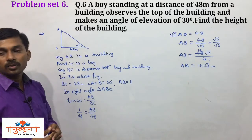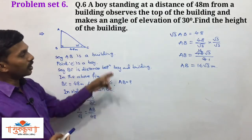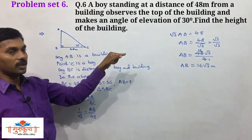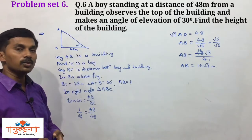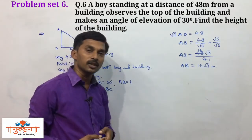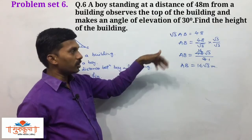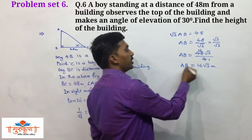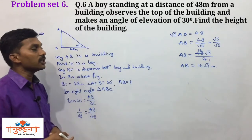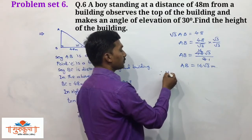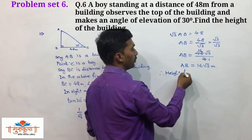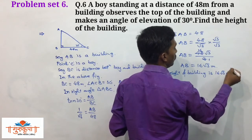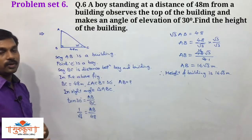If the value of √3 is given, you substitute it — √3 ≈ 1.73 — but since it is not given in this question, we do not use it. The answer is complete: the height of the building is 16√3 meters. This is all about question number 6.